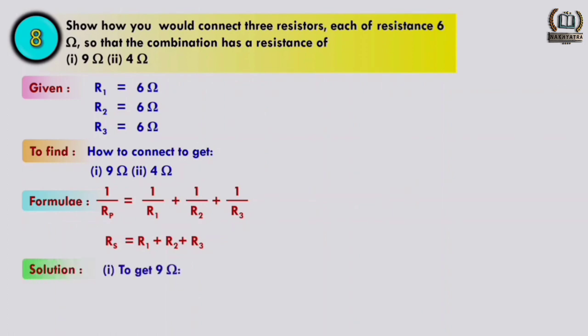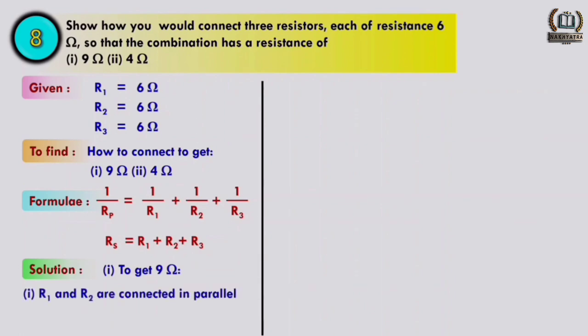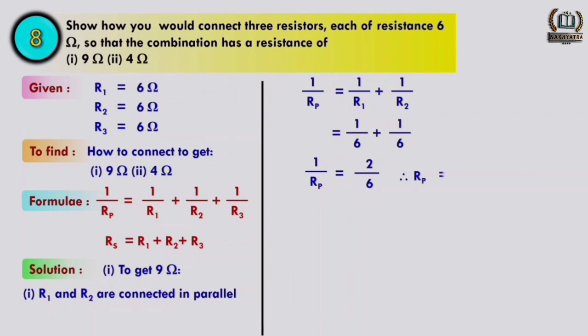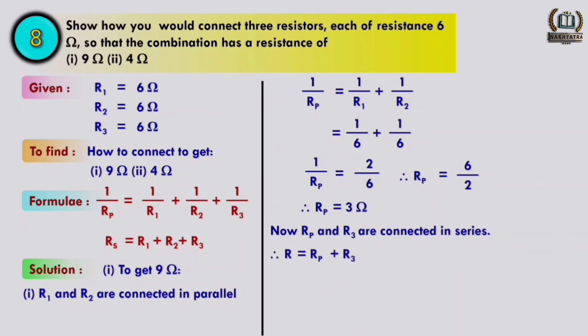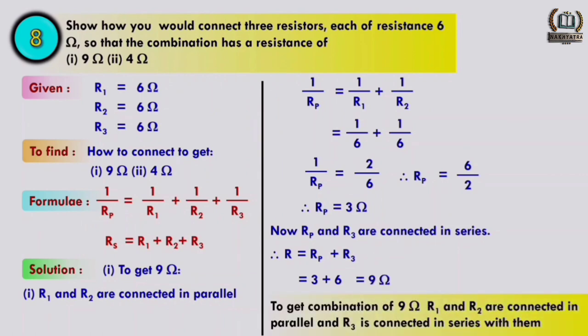To get 9 ohm: connect R1 and R2 in parallel to get Rp = 6/2 = 3 ohm. Then connect Rp in series with R3: R = Rp + R3 = 3 + 6 = 9 ohm. So to get 9 ohm, R1 and R2 are connected in parallel and R3 is connected in series with them.